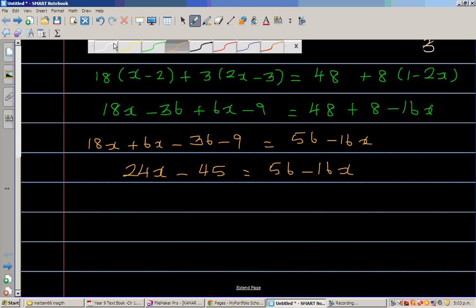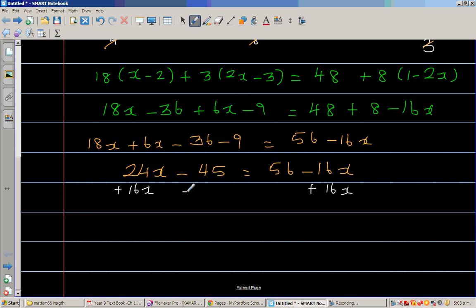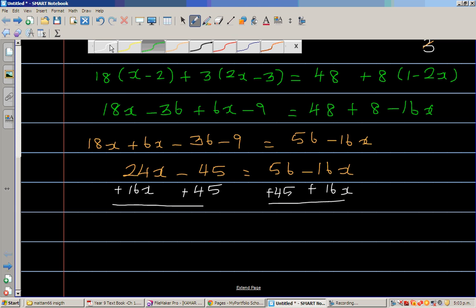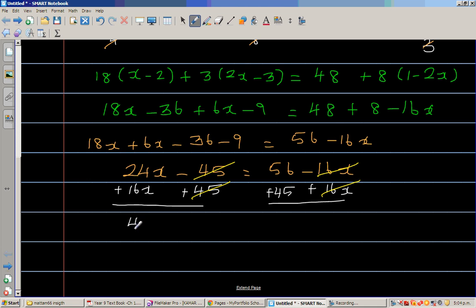I want to bring the x's on one side and the numbers on the right hand side. So I'm going to bring the x's on the left hand side. So I don't want minus 16x sitting here. So I'm going to add 16x to this side. I want the numbers on the right hand side. So I'm adding this by 45. So what remains is 24x plus 16x is 40x.